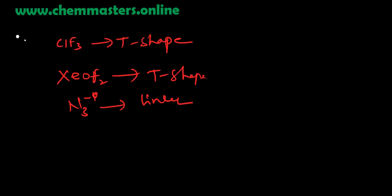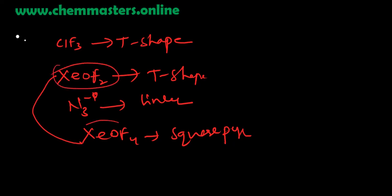The shapes: examples given here as ClF3, which is T-shaped, and XeOF2, which is also T-shaped, and N3⁻, which is linear, and XeF4, which is square planar. I think these two are not completely correct representations because they are not completely memorized.